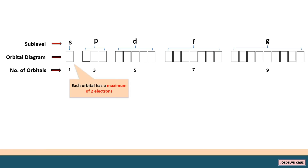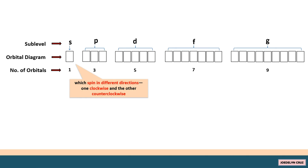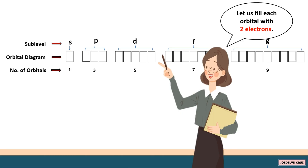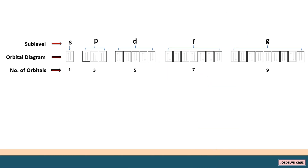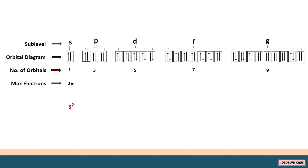Each orbital has a maximum of two electrons, which spin in different directions — one clockwise and the other counterclockwise. So, the maximum number of electrons in the S sublevel is 2, in the P sublevel is 6, in the D sublevel is 10, and in the F sublevel is 14.